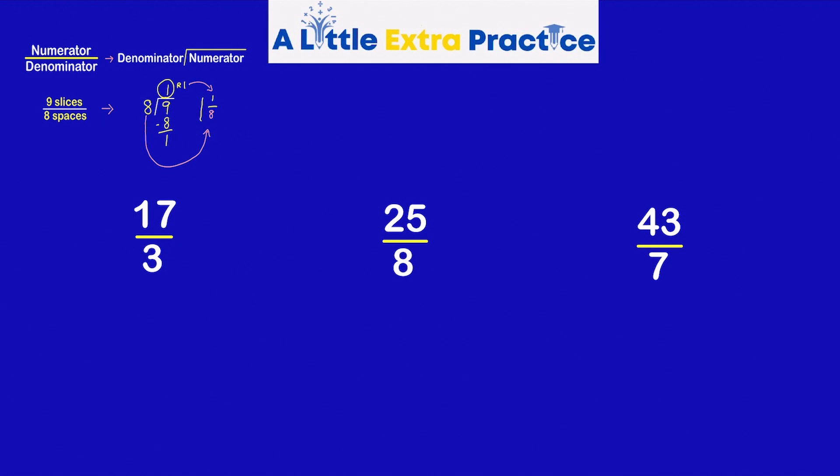Let's go ahead and take a look. First problem, 17 over 3, 17 thirds. Convert that into a mixed number. 17 becomes the dividend, 3 becomes the divisor. Divide. 3 can go into 17 five times. Subtract, and we have 5 and 2 thirds.